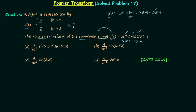Let's say signal x(t) has Fourier transform X(ω). We will first calculate X(ω) using the given definition of signal x(t).